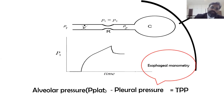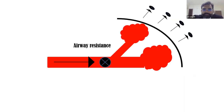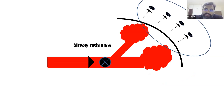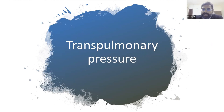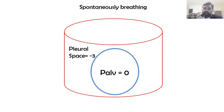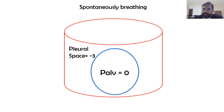Pleural pressure is measured by esophageal manometry. The pressure required to raise the chest wall is not captured by plateau pressure alone — that requires esophageal pressure measurement. Their combination gives transpulmonary pressure: alveolar pressure minus pleural pressure. In a spontaneously breathing patient, pleural space pressure is normally minus 3 to minus 4 cmH₂O.